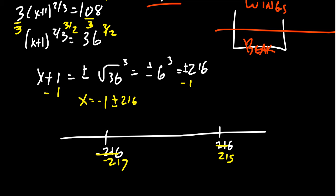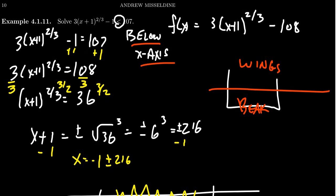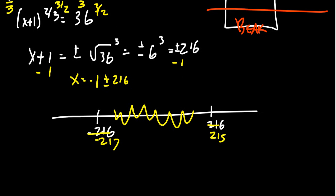If we want the beak, we are going to grab the things between negative 217 and 215. And looking back at the original inequality, equality was not allowed there, so we're just going to get the points between the markers there. That's just the beak of our bird. And so our solution would look like negative 217 comma 215.